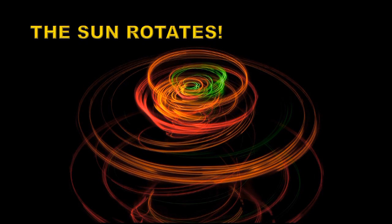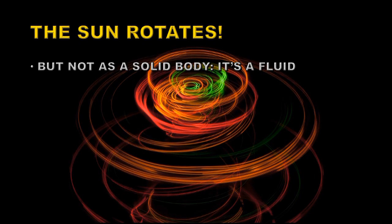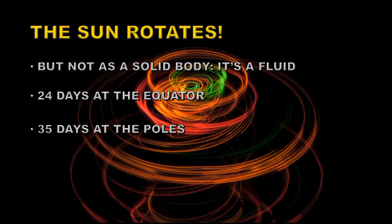It comes as a surprise to many people that in fact the Sun does rotate. But it doesn't rotate as a solid body because it's a fluid. So some parts of the Sun rotate faster than other parts. At the equator the Sun rotates once every 24 days. At the poles it's once every 35 days.